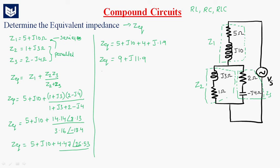So this is Z equivalent. In polar form, Z equivalent is equal to 14.9 at an angle 52.8 degrees.